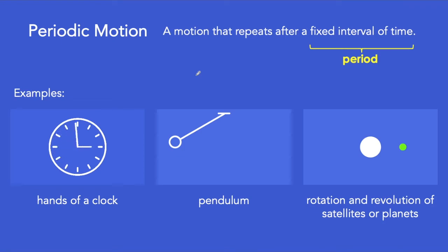Let us differentiate the terms periodic motion, oscillatory motion, and simple harmonic motion because sometimes people interchange the usage of these terms even if there's technically a difference in their operational definitions.